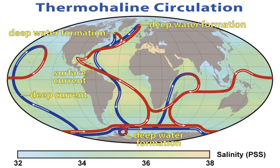Thermohaline circulation is a part of the large-scale ocean circulation that is driven by global density gradients created by surface heat and freshwater fluxes. The adjective thermohaline derives from thermo- referring to temperature and haline- referring to salt content, factors which together determine the density of seawater.